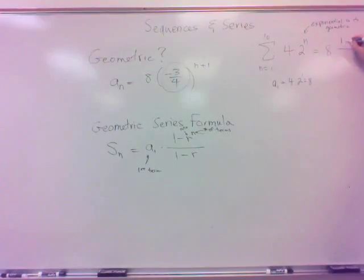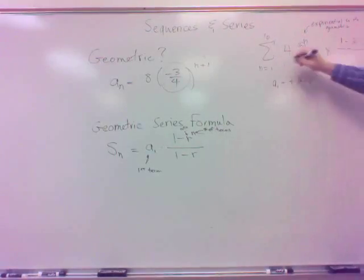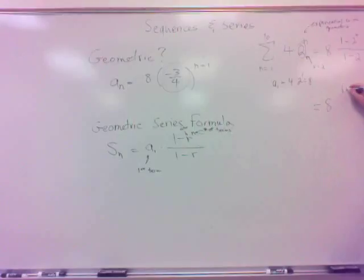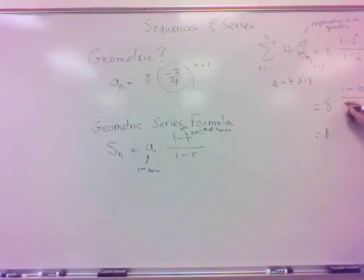Times that by 1 minus, what's the ratio? r is 2, because it's the base. Always the base there. So r is 2. I've got 1 to 10, so that's 10 terms. And then divide by 1 minus 2. So that's going to be 8 times 1 minus 2 to the 10th is 1,024. Divide that by negative 1. So it's 8 times negative 1,023 divided by negative 1, which is basically 8 times 1,023, which is 8,184.